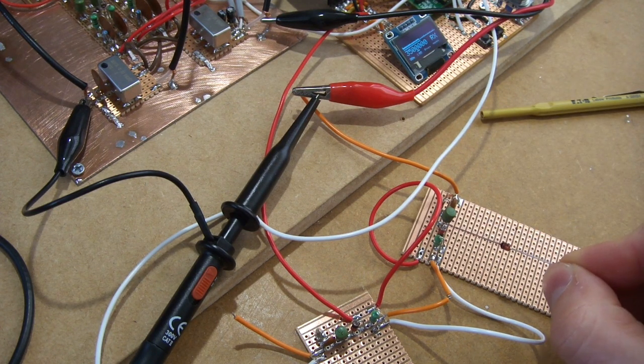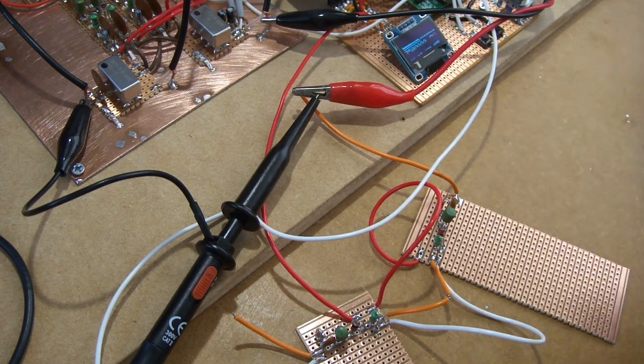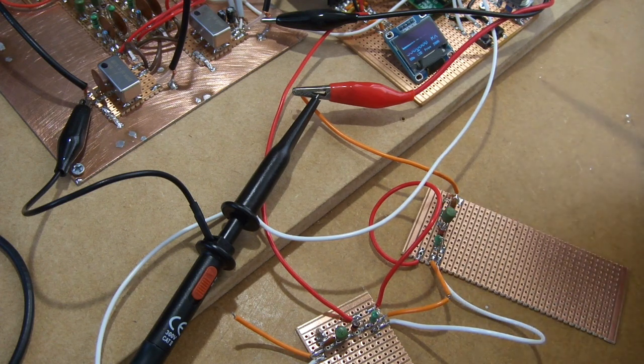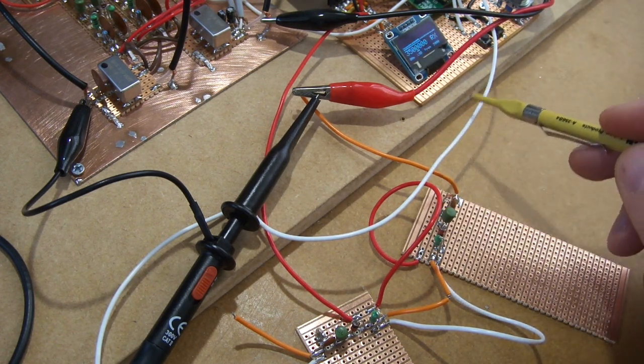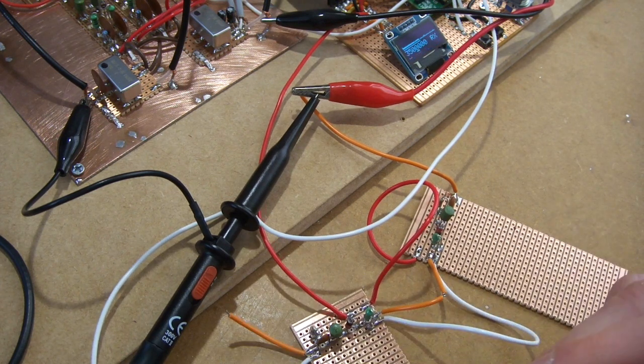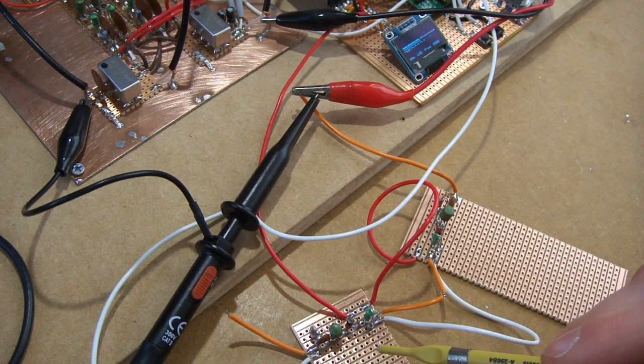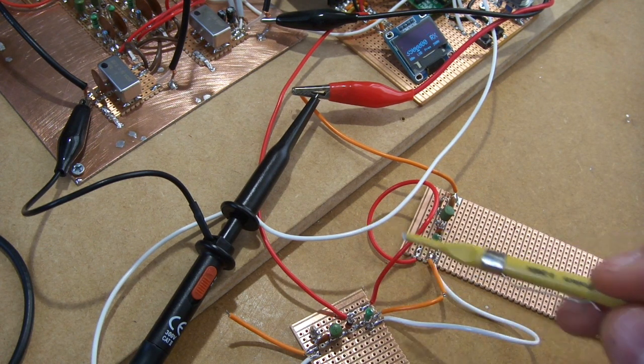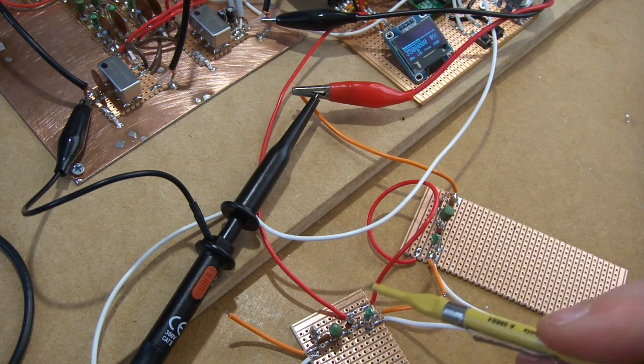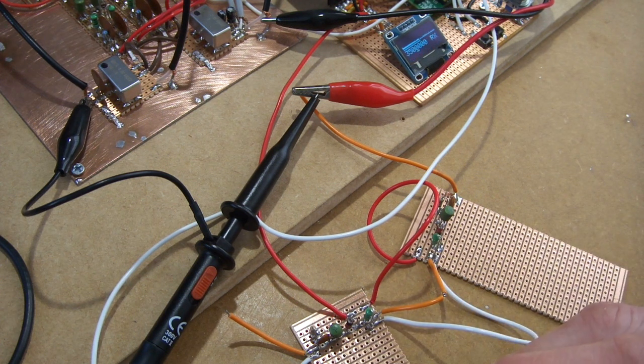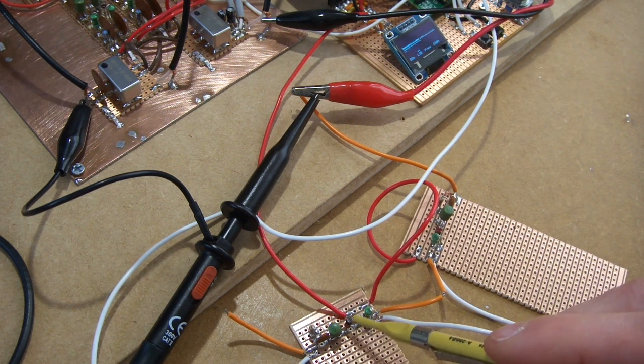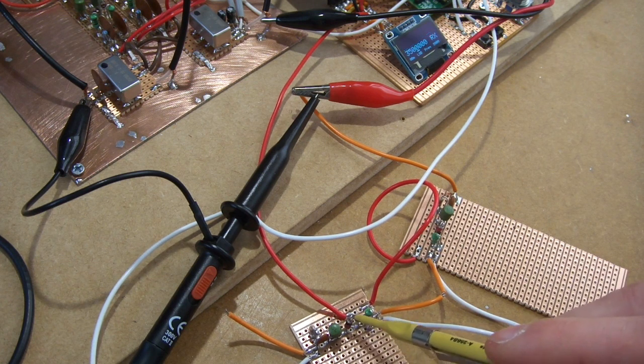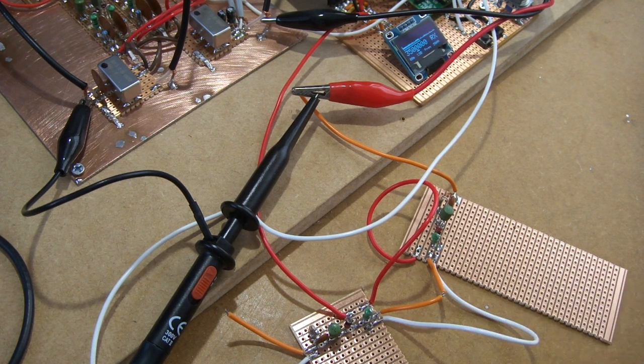So a couple of experiments here. At the moment, the circuit is wired up so essentially the Teensy is putting out on this white wire here either 0 or 3.3 volts. If it's 0, then it turns the circuit on. If it's 3.3 volts, then there's no voltage drop across the diode and it basically turns off.